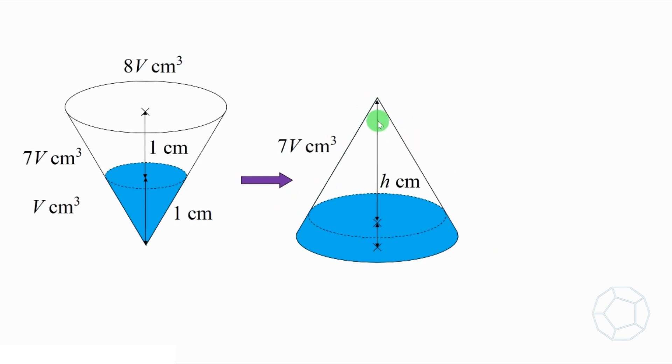Let's call the height of the empty space h cm. With the volume of the cone right here being 8V cm³ as well, then the volume ratio 7V over 8V is equal to h over 2 whole cube. Cancel out the V and taking cube root on both sides, then we have the cube root of 7 over 8 is equal to h over 2. That is, h is equal to cube root of 7.